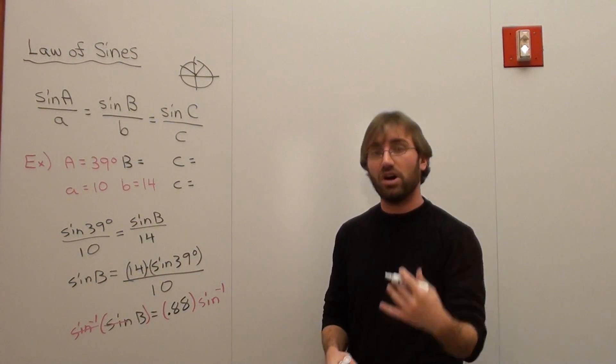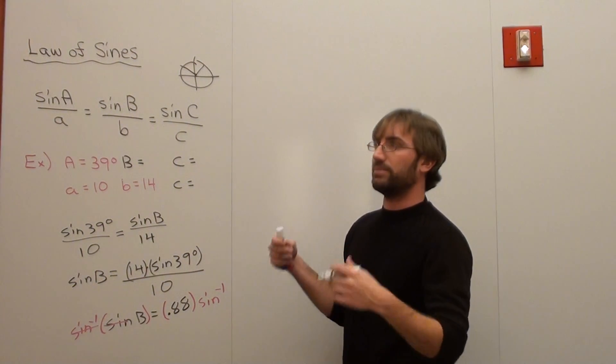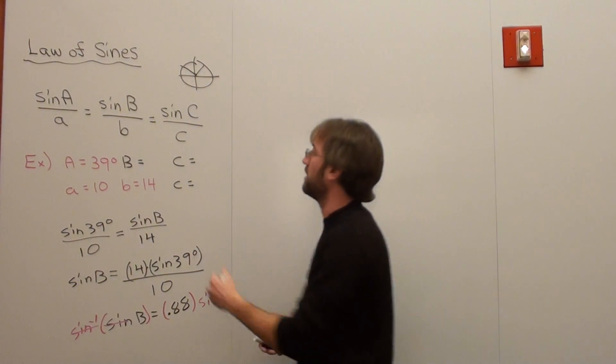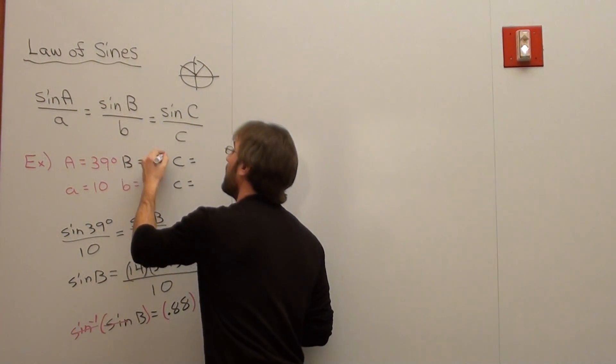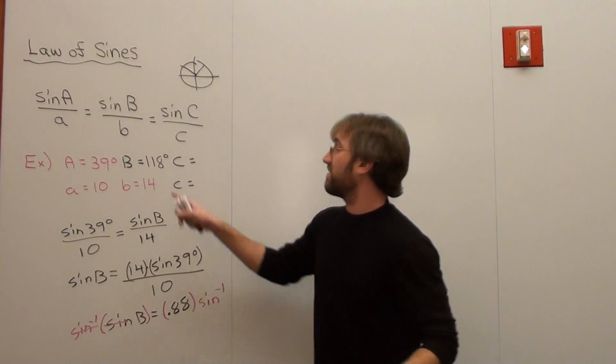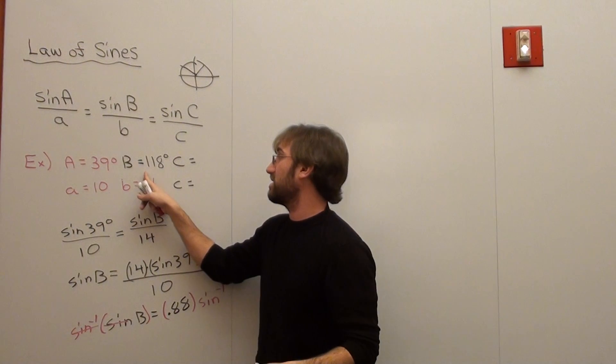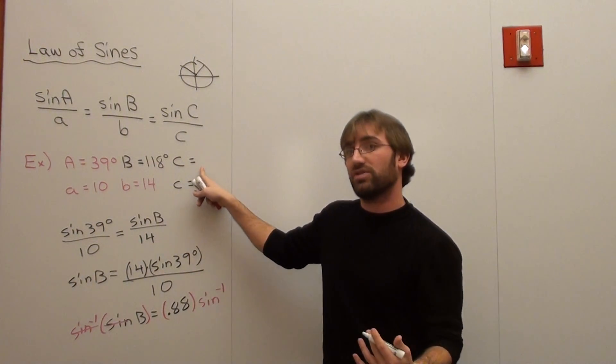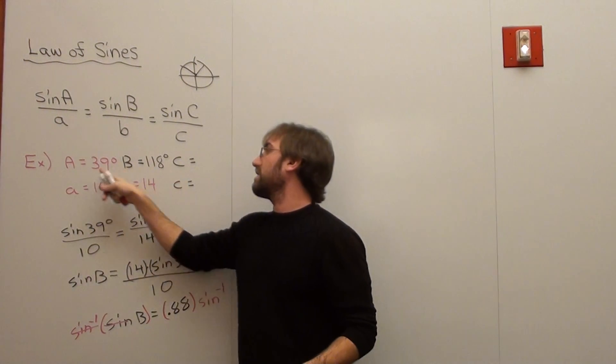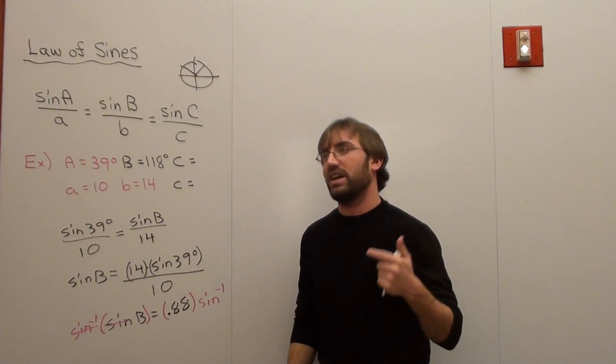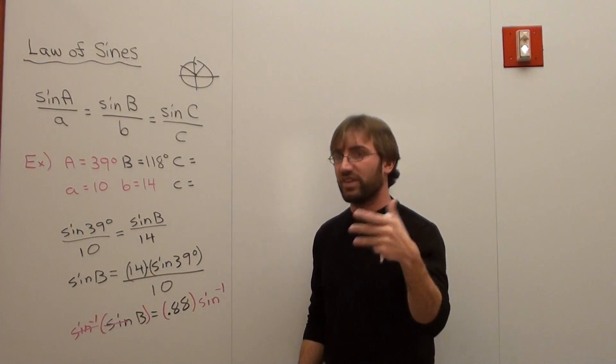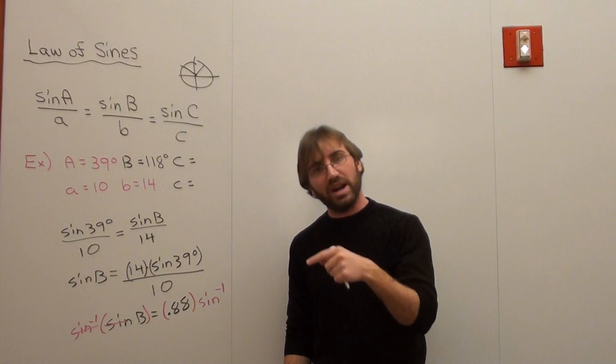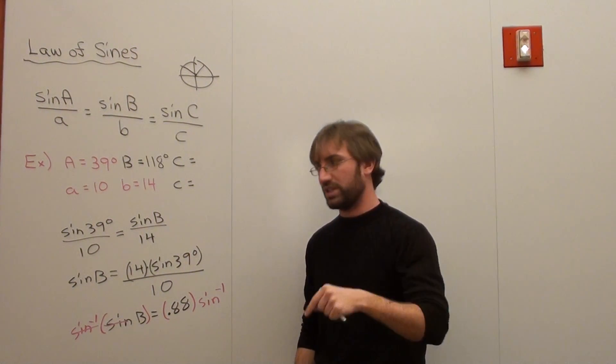So the inverse sine of 0.88 is also about 118 degrees. Now that changes everything, because if this is 118 degrees instead of 62 degrees, it's going to change the angle for the C value. 118 plus 39 is 157, so 180 minus 157 is 23.